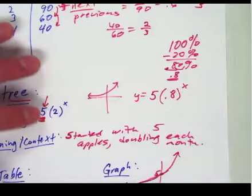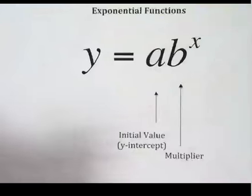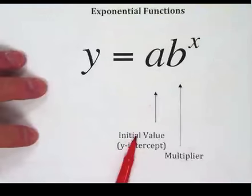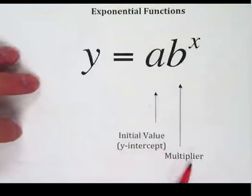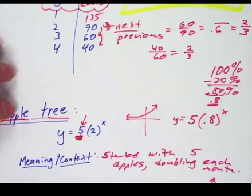So those are the things that you need to consider when trying to write an equation of exponential y equals a times b to the x. You need to find the initial value and the multiplier. Multiplier is key and it comes from next divided by previous.